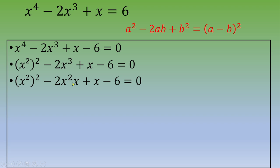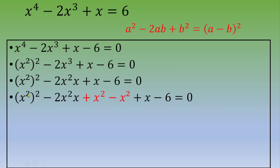With these two first terms, we have the beginning of the remarkable identity, but one term is missing: x². So we add x² and subtract x² at the same time, keeping the equation balanced.